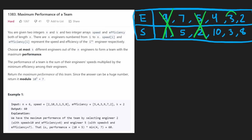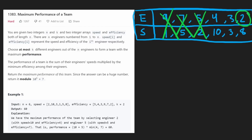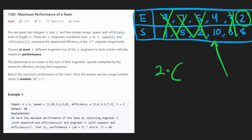Running through the rest of the example: at efficiency 3, we pop the engineer with the lowest speed, leaving two engineers. Performance is 3 times (10 + 3) = 39 — not the solution. At the next efficiency, we pop the one with the smallest speed and with efficiency 2, we get 2 times (10 + 8) = 36 — also not the solution. The maximum we found was 60, which is what we'd return.